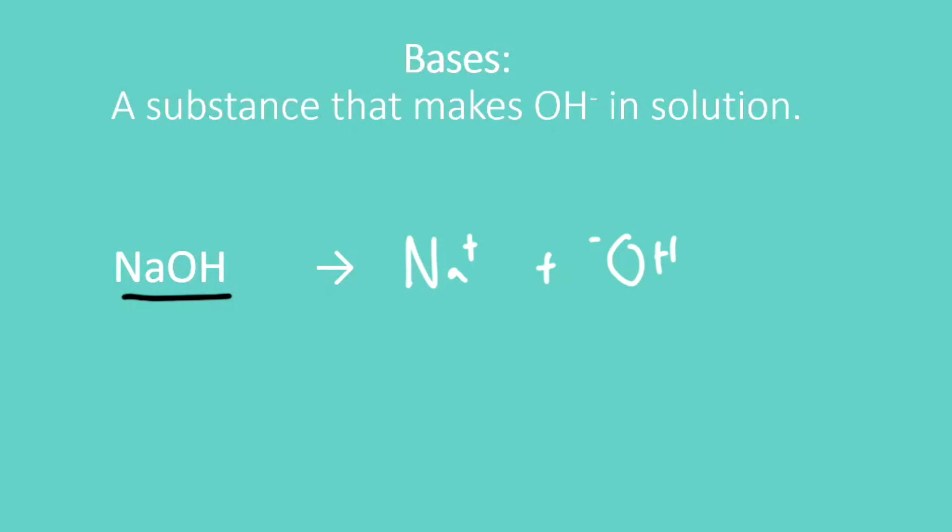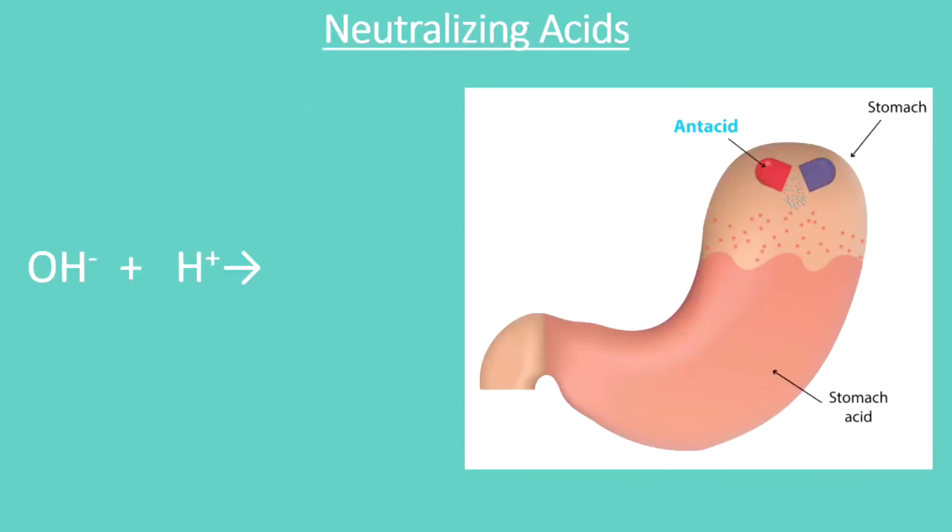Okay, so now we're ready to think about why bases and acids are opposites. So here is my stomach. I've added my antacid. So I'm combining an acid and a base. Well, recall that a base in solution has OH minus, and an acid in solution has H plus. What happens when those combine?